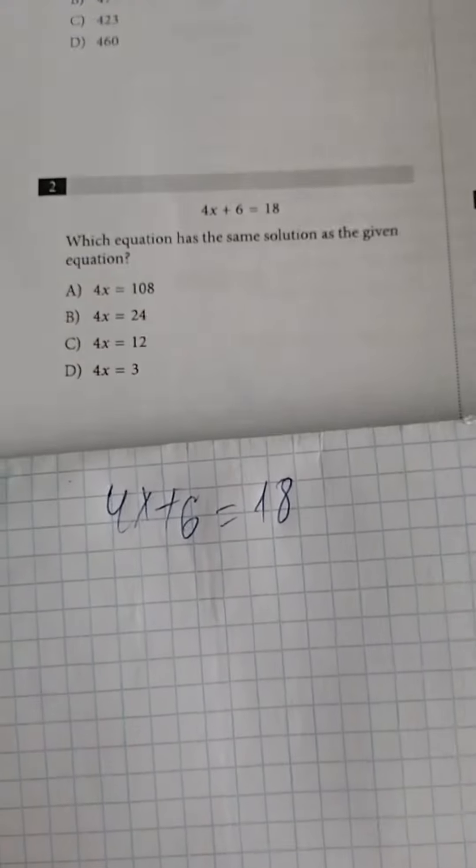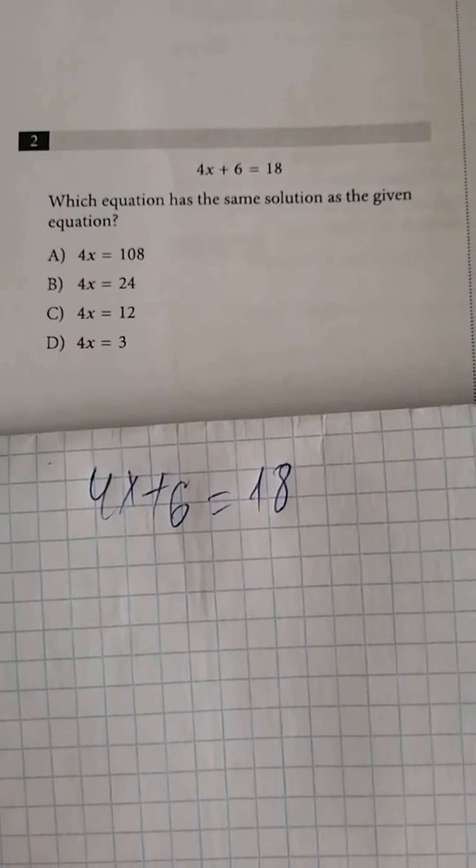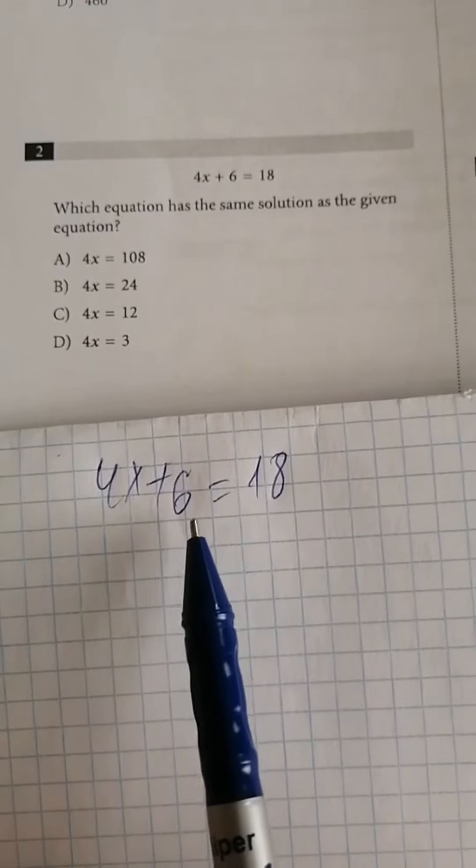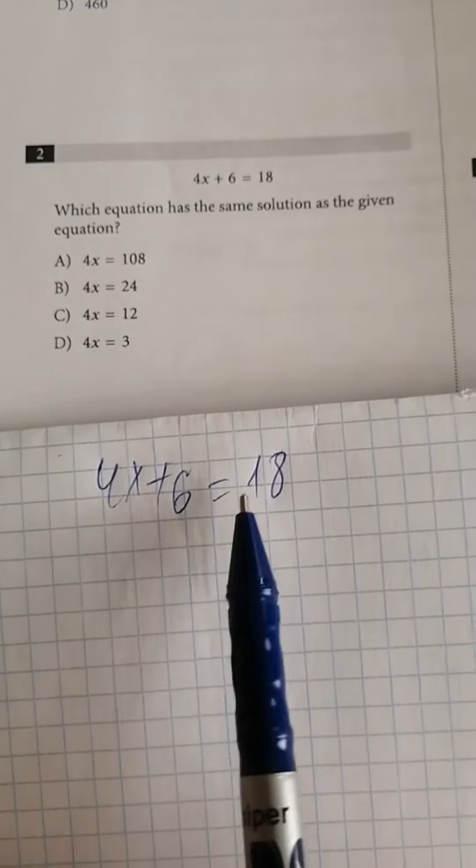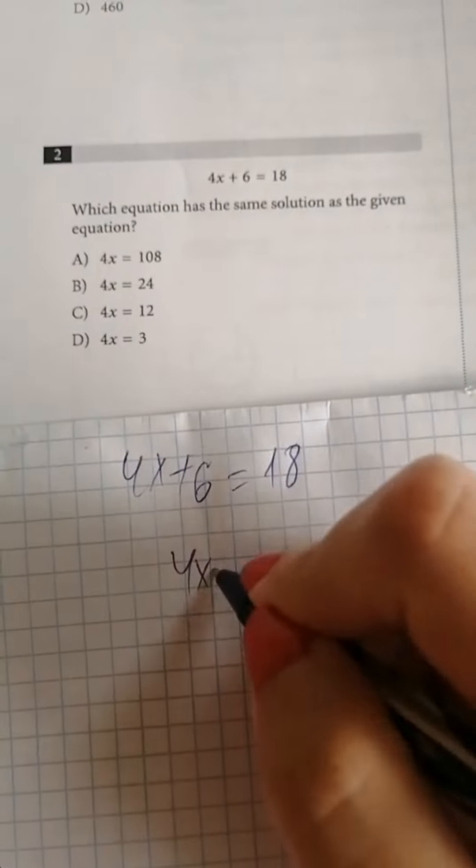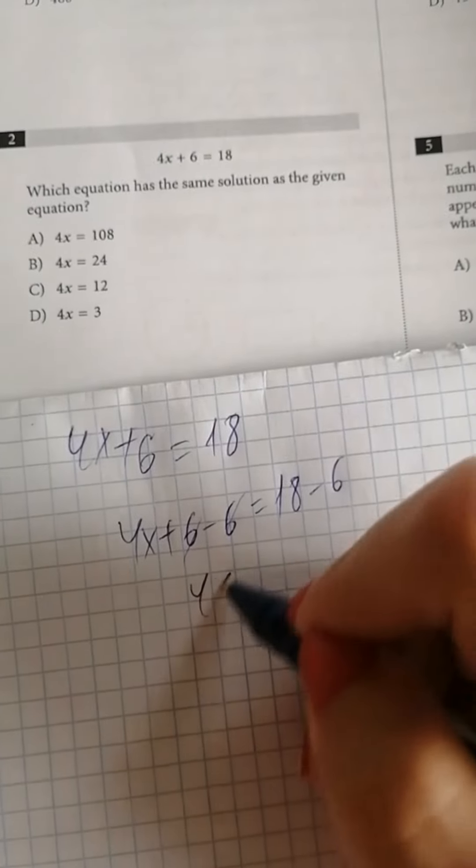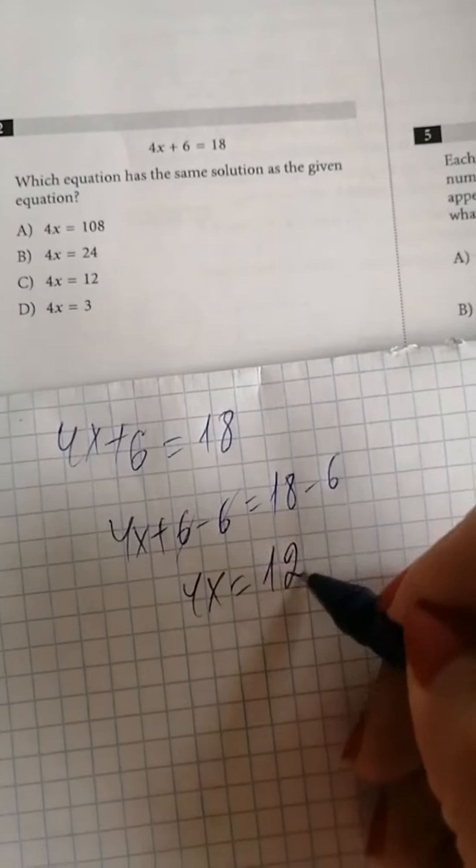4x plus 6 is equal to 18. Which equation has the same solution as the given equation? Let's subtract 6 from both sides of the equation. Therefore, it is going to be 4x is equal to 12.